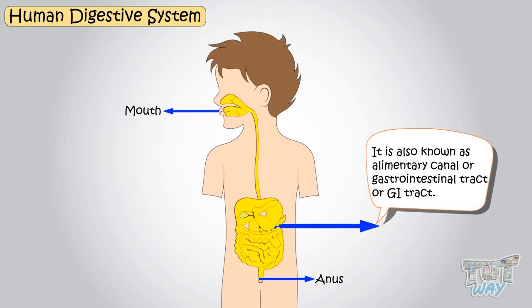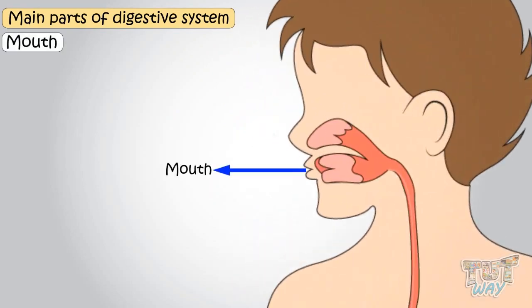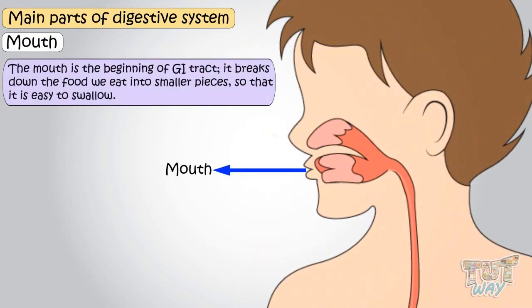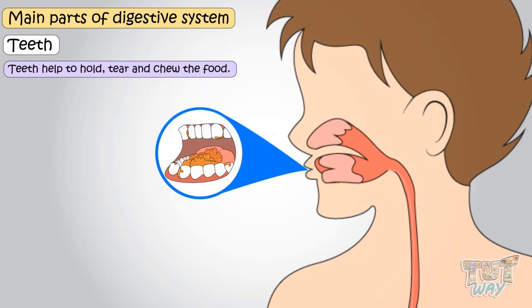Now we are going to learn the main parts of the digestive system. Mouth — the mouth is the beginning of our GI tract. It breaks down food we eat into smaller pieces so that it's easy to swallow. Teeth help to hold, tear, and chew the food.